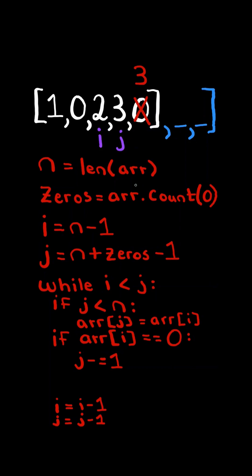Again, index j is less than n, so we set the value at array of j equaling the value at array of i. And we decrement i and j by 1.